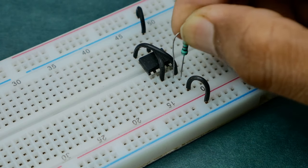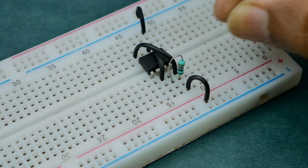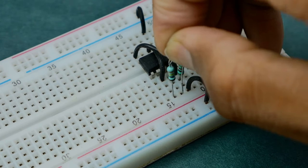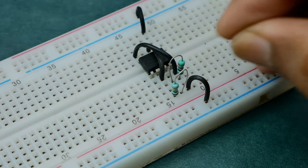Next place a 1 kilo ohm resistor between pin 7 and pin 8 of the 555 IC. Then place a 100 kilo ohm resistor between pin 6 and pin 7 of the IC.